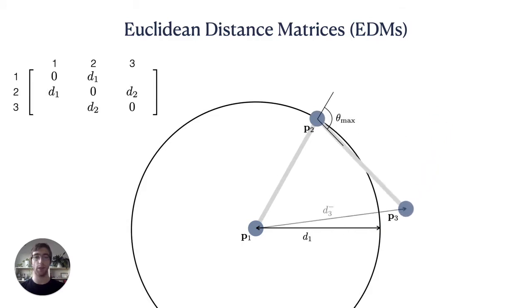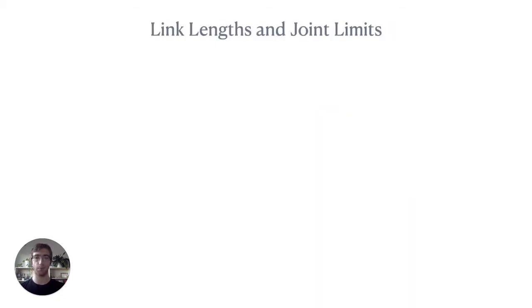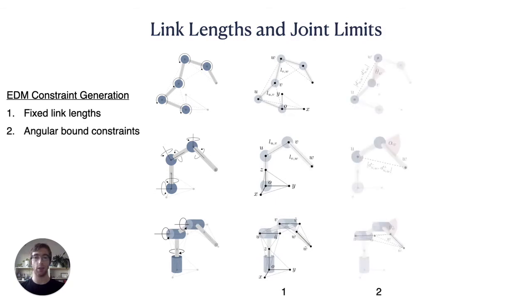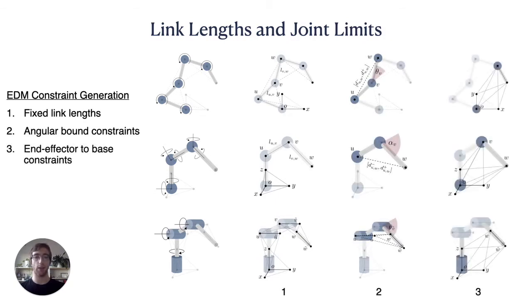Similarly, symmetric joint angle constraints become bound intervals on distances between points adjacent to the bounded joint. This relationship between kinematic constraints and EDM elements provides a procedure for transforming a broad class of inverse kinematics problems into partially known EDMs for a variety of manipulator types. Fixed link lengths provide exactly known distances, angular constraints provide bounded distances, and goal poses provide exactly known distances from end effector points to the robot's fixed base.